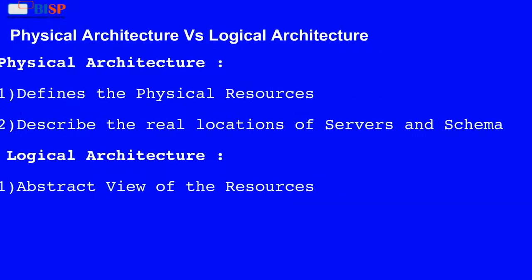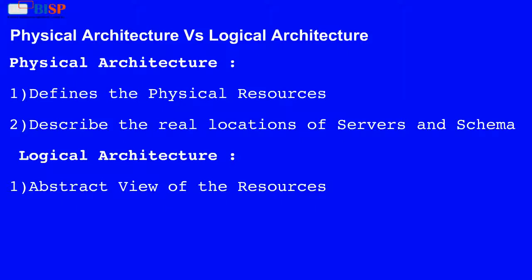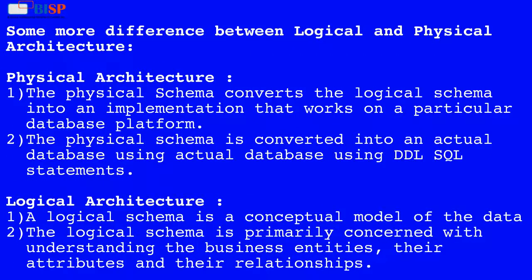Physical architecture vs. logical architecture. Physical architecture: 1. Defines the physical resources. 2. Describes the real locations of servers and schemas. Logical architecture: 1. Provides an abstract view of the resources.